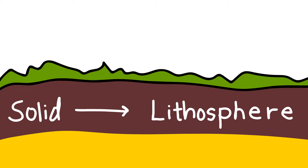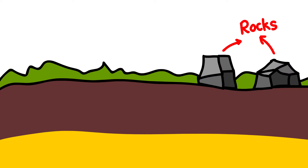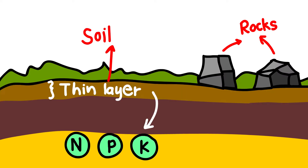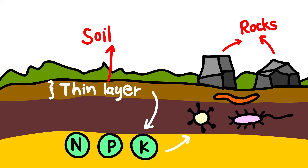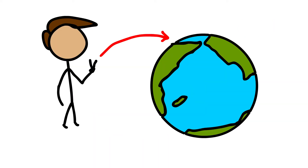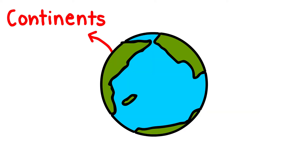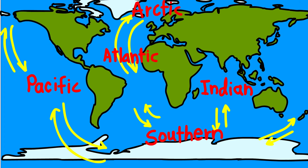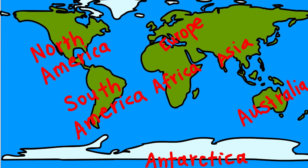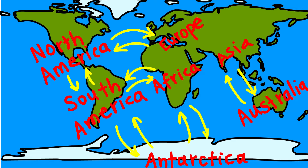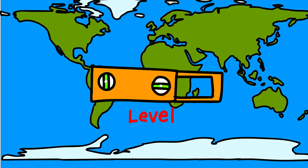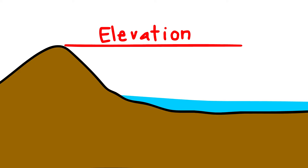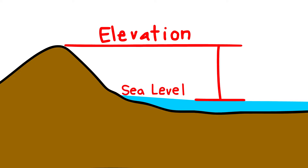Lithosphere. The solid portion of the Earth is called the lithosphere. It comprises the rocks of the Earth's crust and the thin layers of soil that contain nutrient elements which sustain organisms. There are two main divisions of the Earth's surface: the large landmasses known as the continents, and the huge water bodies called the ocean basins. All the oceans of the world are connected with one another. The level of seawater remains the same everywhere, and elevation of land is measured from the sea level, which is taken as zero.